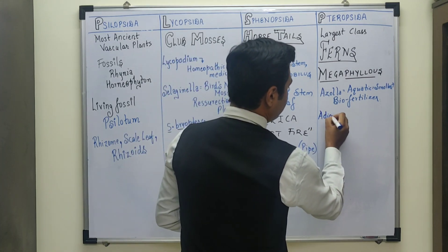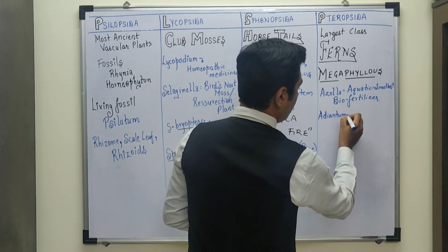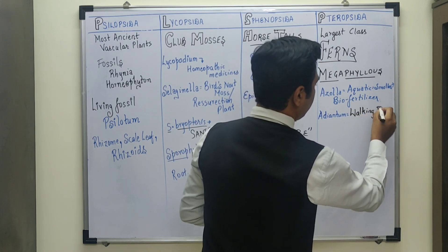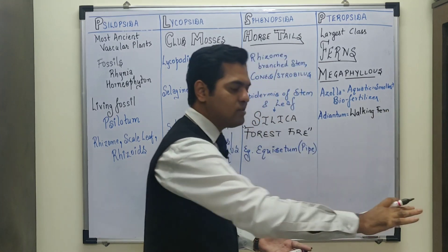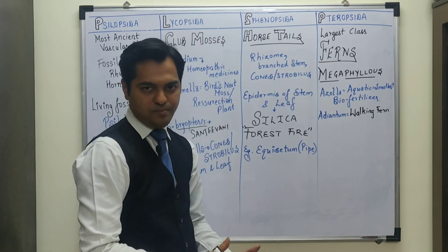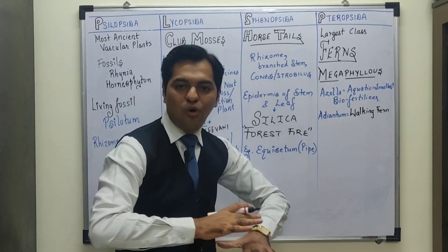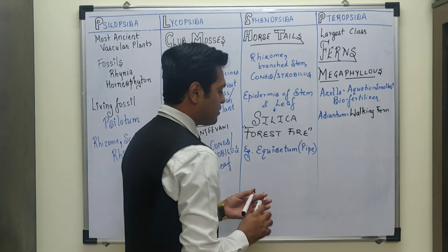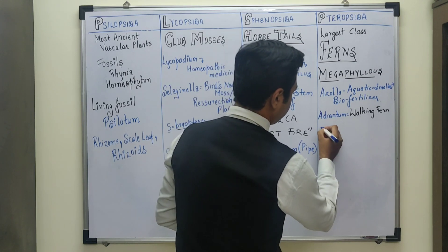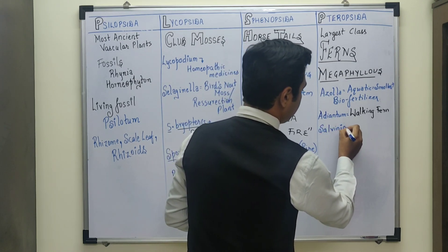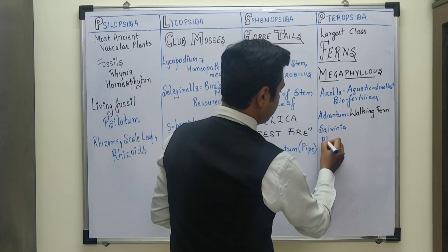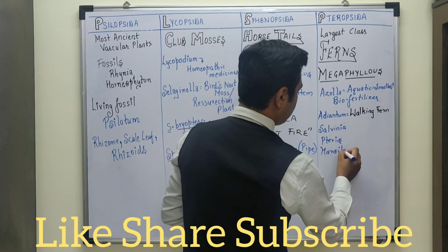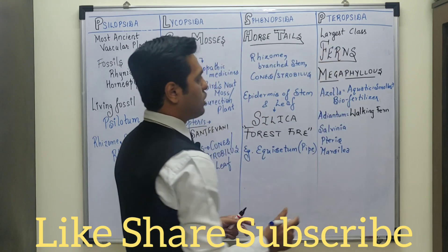Azolla acts as a biofertilizer because on the dorsal lobe of its leaf there is a shelter for the cyanobacterium Anabaena, which helps in nitrogen fixation. Hence Azolla increases the nutrient content of its environment. Another member is Adiantum, also known as the walking fern, because it spreads very fast through vegetative propagation. Other members include Salvinia, Pteris, and Marsilea.